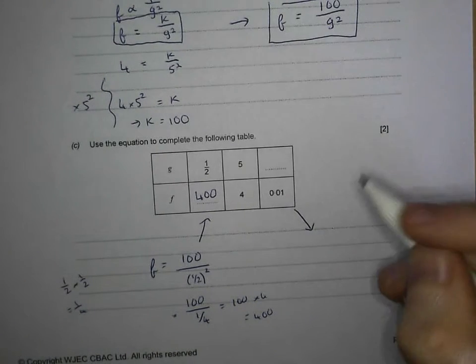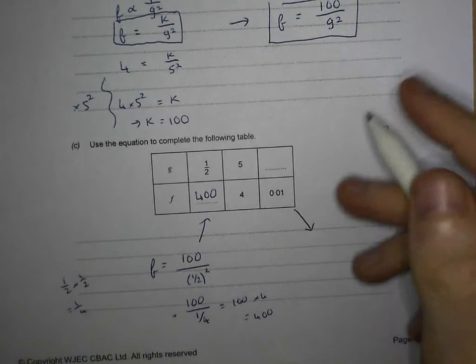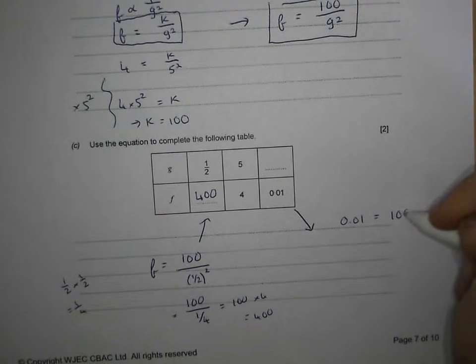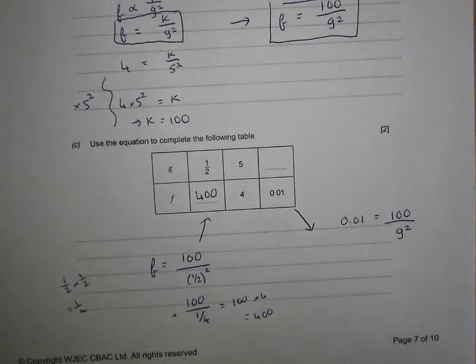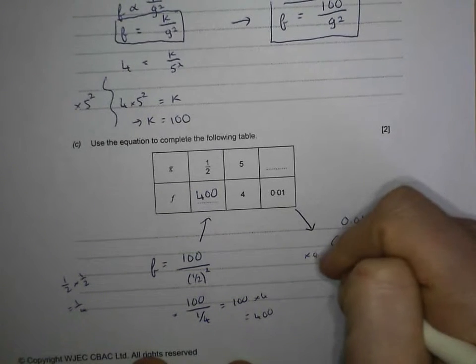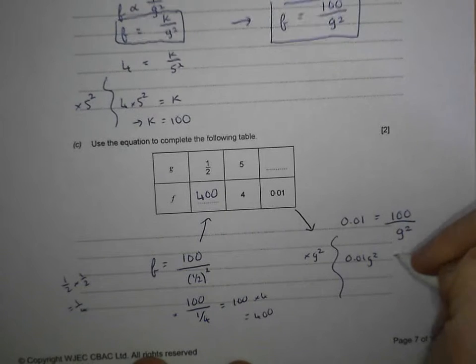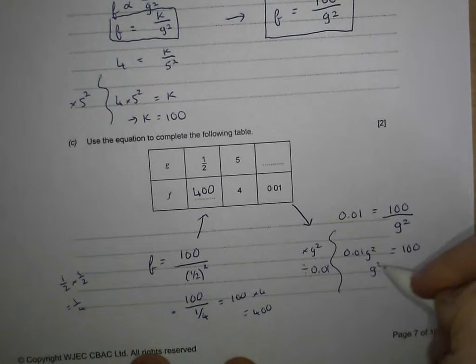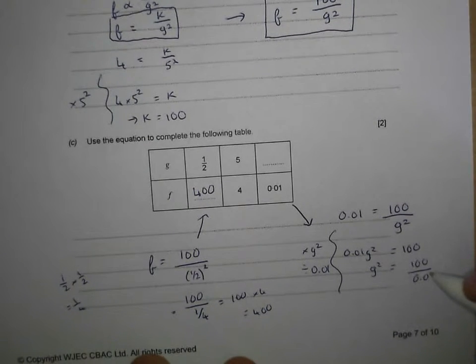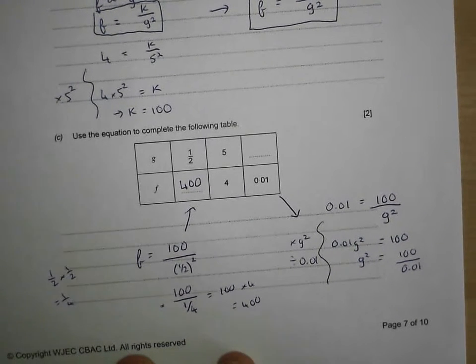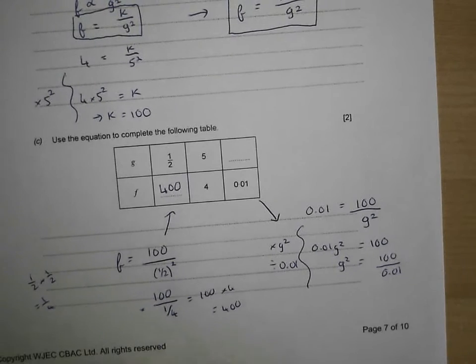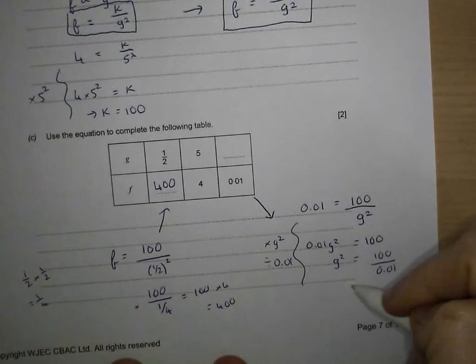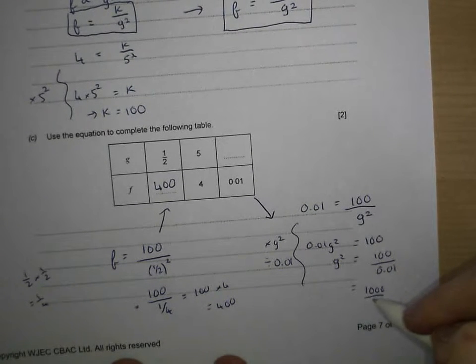What about this one? What is g when f is 0.01? We're going the other way around here. So f 0.01 equals 100 over g squared. We're going to have to do a little bit of arrangement. Multiply both sides by g squared, so we get 0.01 g squared equals 100. Then divide by 0.01 to get g squared equals 100 divided by 0.01. Can we do this without our calculator? I'll show you a little trick. If you're not happy dividing by 0.01, you've got a nice fraction here. Multiply top and bottom by 10, so we get 1,000 divided by 0.1. Not quite simplified yet, so times top and bottom by 10 again. You get 10,000 divided by 1, which is 10,000.